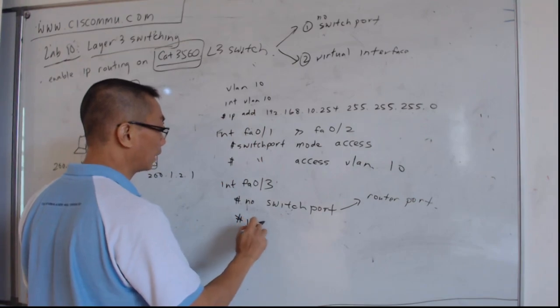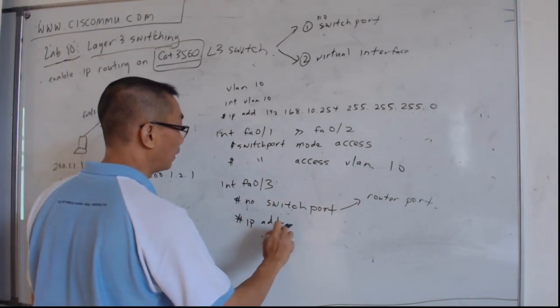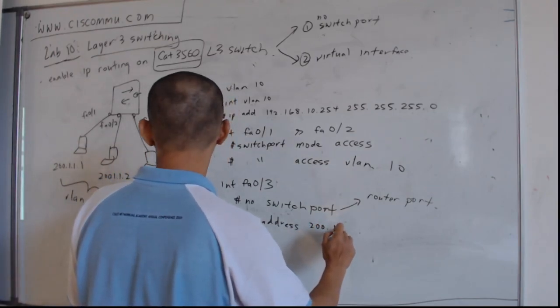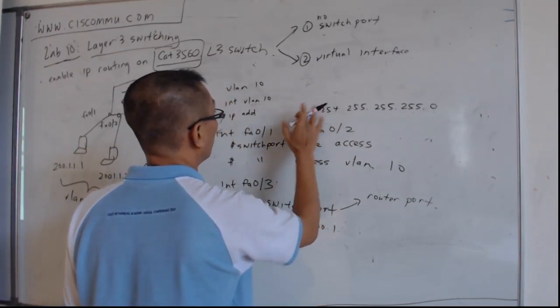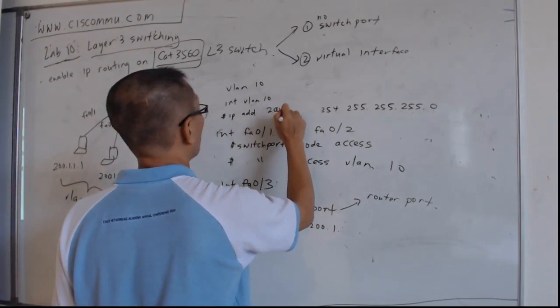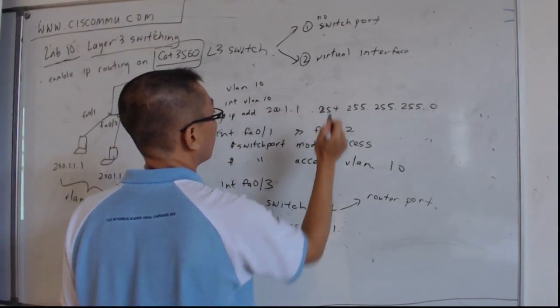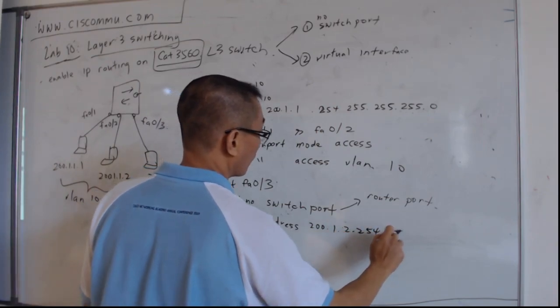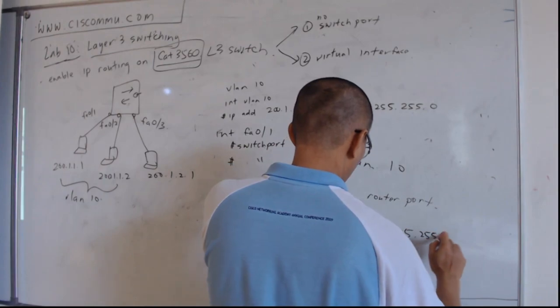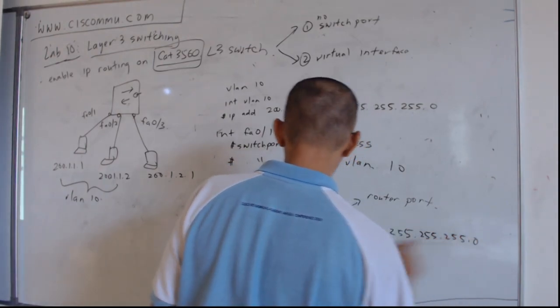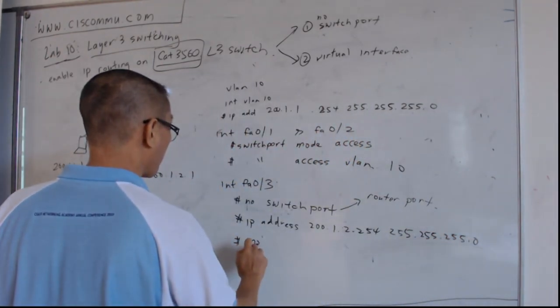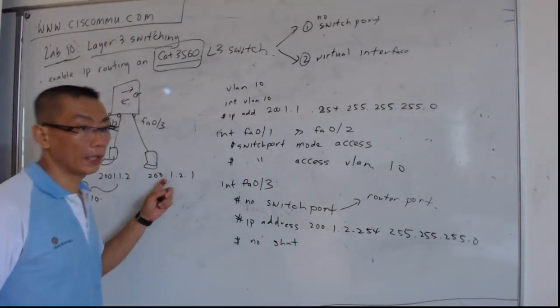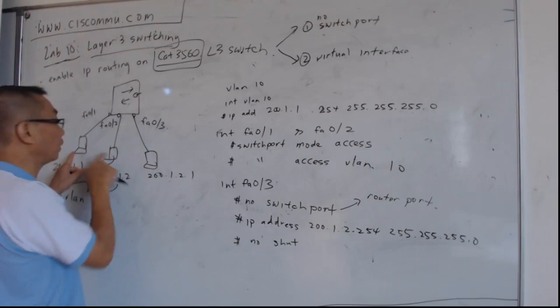All right? So after it becomes a router port, then you can do an IP address. Then from here, you can see that this port and this port, they will do a routing. So the routing will go through the VLAN 10 interface.